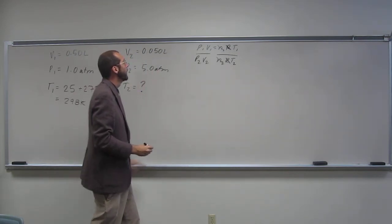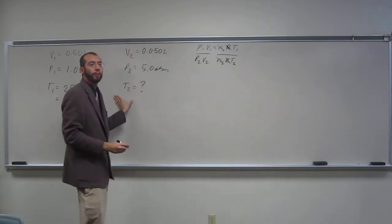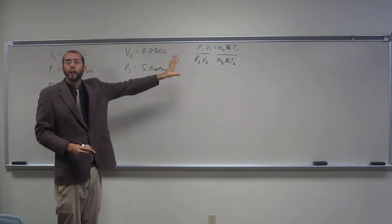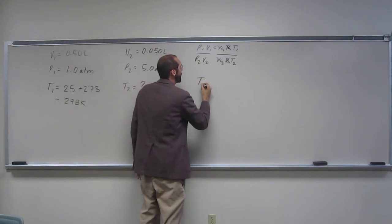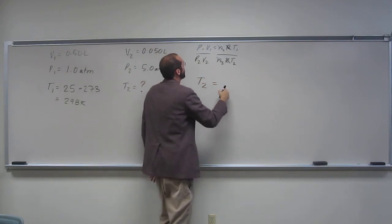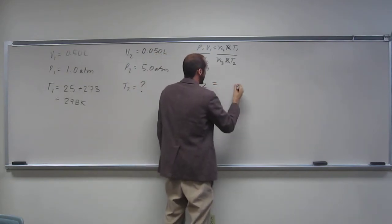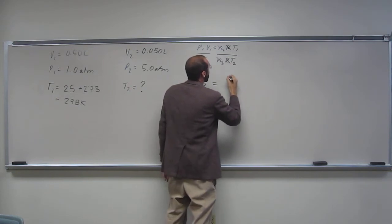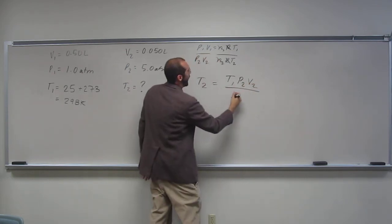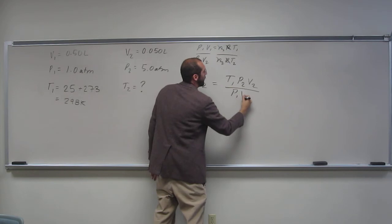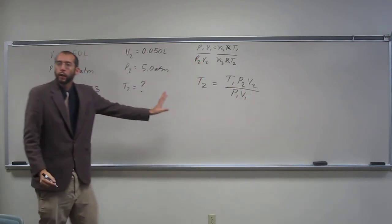So let's solve for T2. Let's rearrange that equation solving for T2. Okay, so what's our equation going to be? T2 equals what? So T1, right? P2V2, like you said, divided by P1V1, right? Is everybody okay with that?